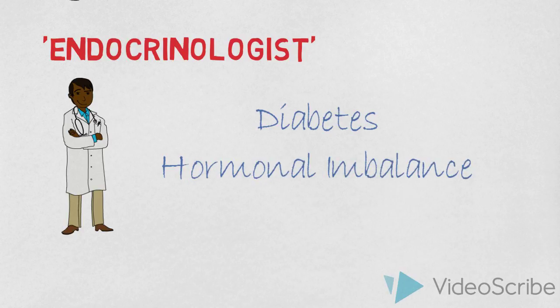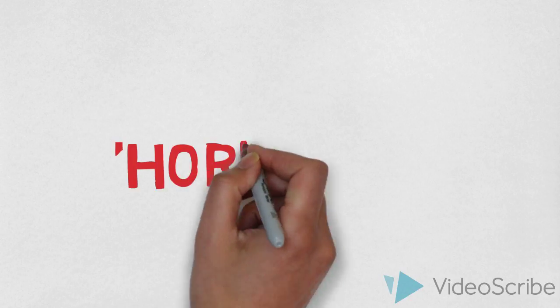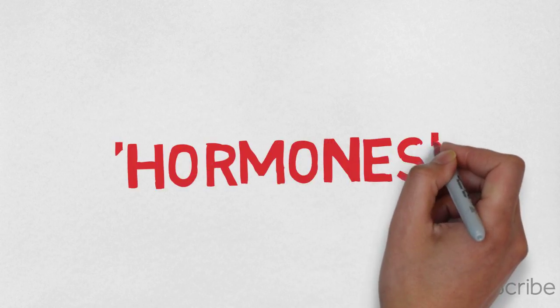An endocrinologist is a doctor who deals with diabetes and problems associated with hormonal imbalance. So what are hormones and what do they do?